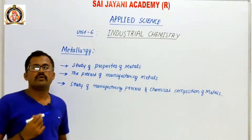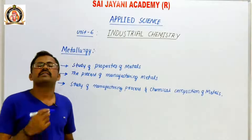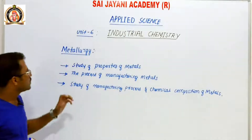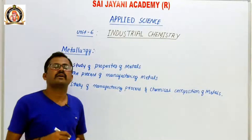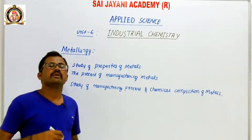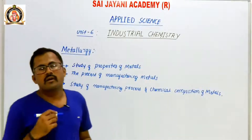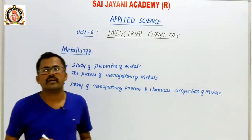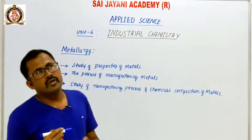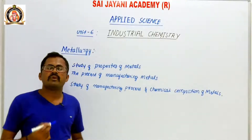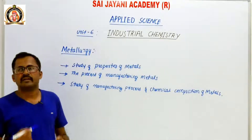We know that all metals are not available free in nature — they are found in combined form in the earth's crust. Whether a metal is free or combined depends on its reactivity. Metals that are less reactive may be found in free state, while more reactive metals are found in combined forms.